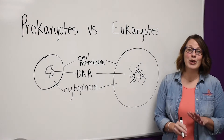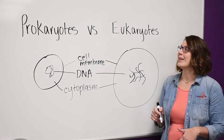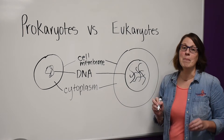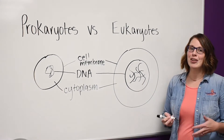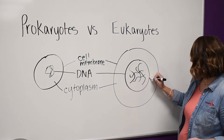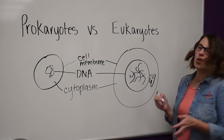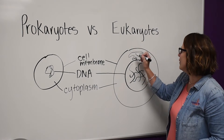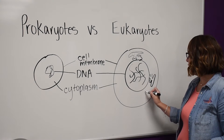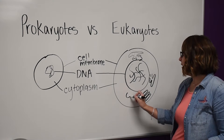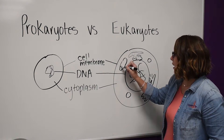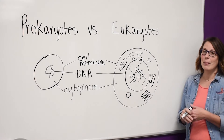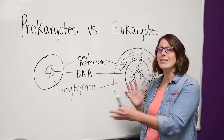Here is the first key difference that sets the two apart: eukaryotes have their DNA stored in a nucleus, which is a membrane-bound organelle. Eukaryotes also have many other types of membrane-bound organelles, such as the endoplasmic reticulum (ER) — some smooth and some rough because it has ribosomes on it — as well as Golgi apparatuses, lysosomes, and mitochondria, among others. Prokaryotes lack these membrane-bound organelles, and that's what really sets the two cell types apart.